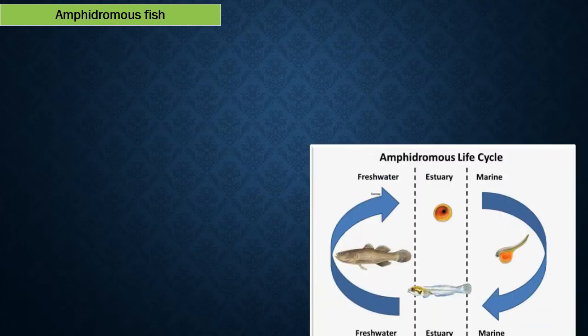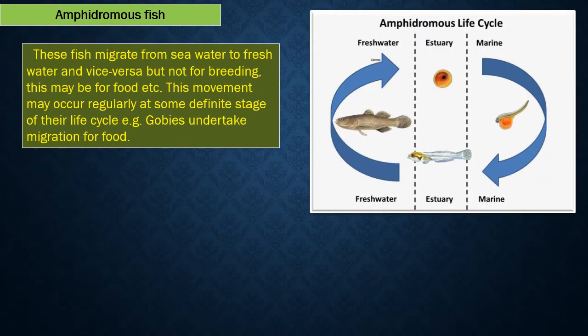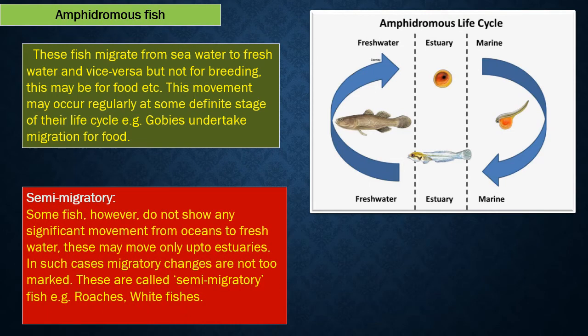Amphidromous fish migrate from seawater to freshwater and vice versa, but not for breeding — this may be for food, etc. This movement may occur regularly at some definite stage of their life cycle. For example, gobies undertake migration for food. Some fish, however, do not show any significant movement from oceans to freshwater and may move only up to estuaries. These are called semi-migratory fish. For example, roaches and whitefishes.